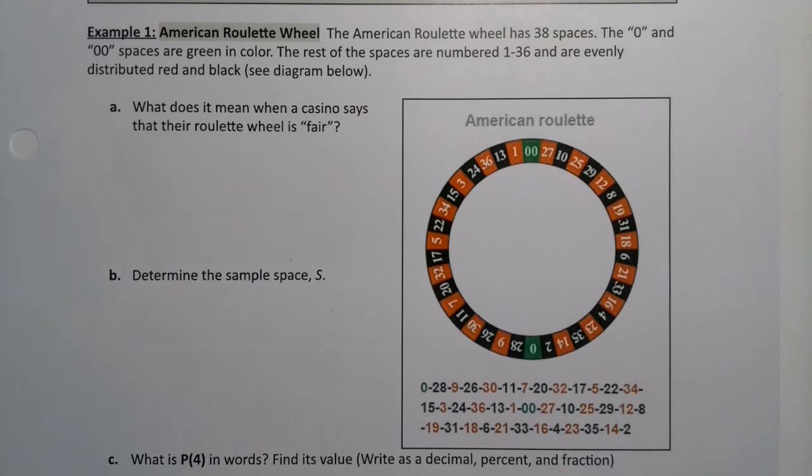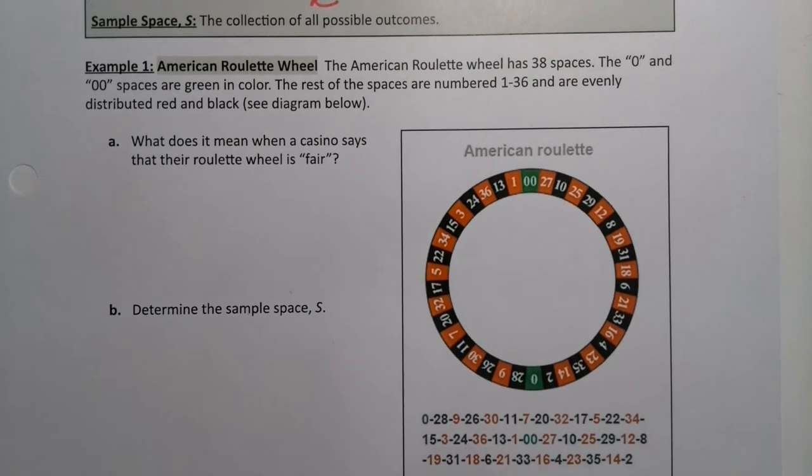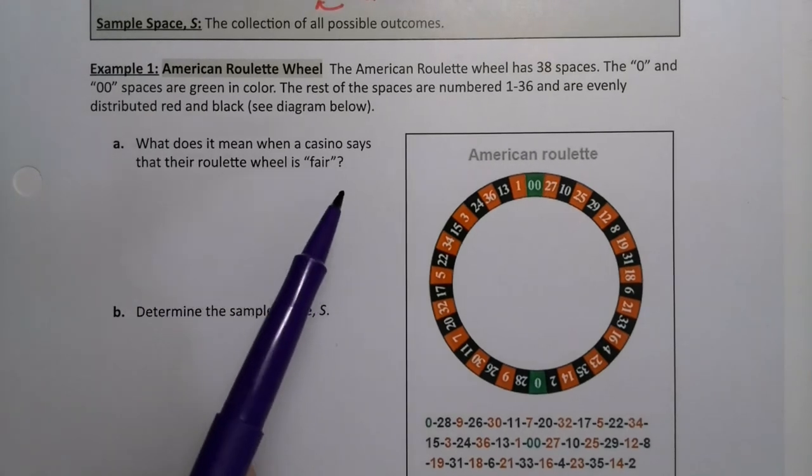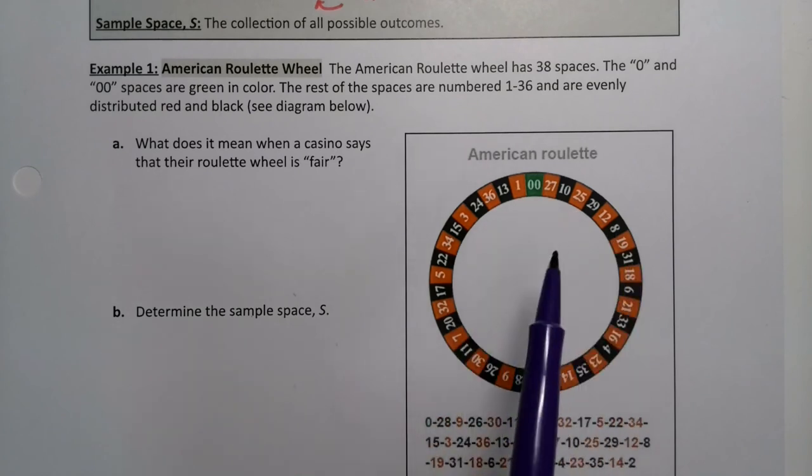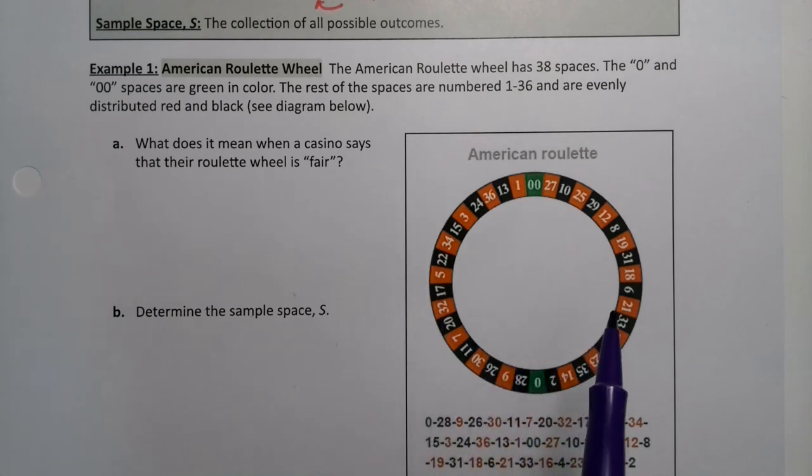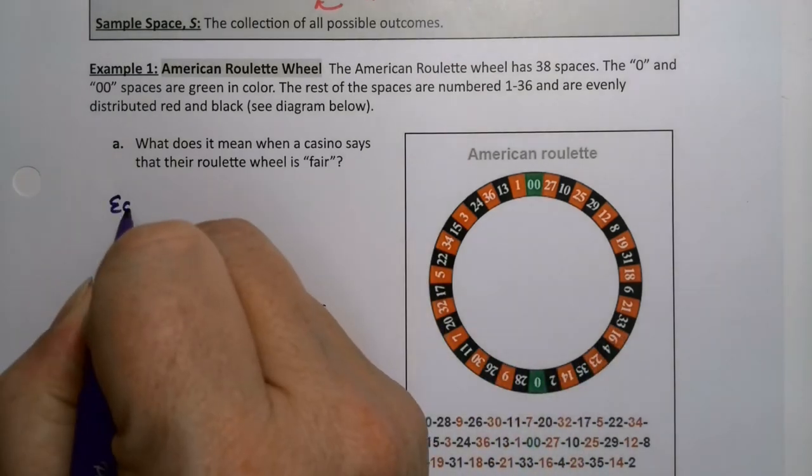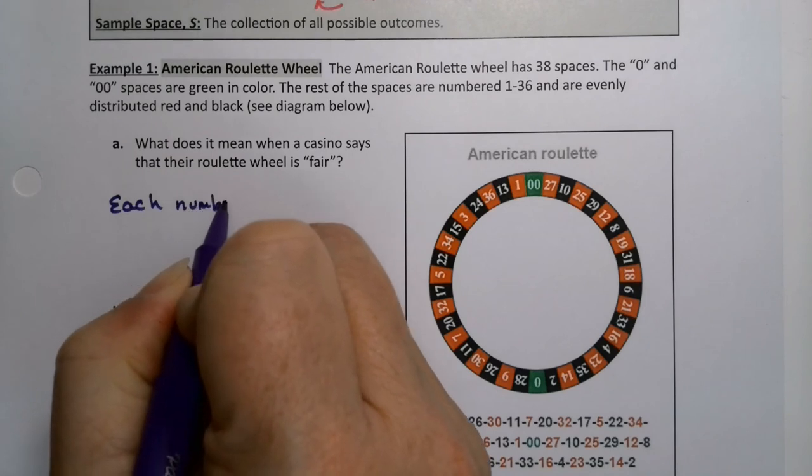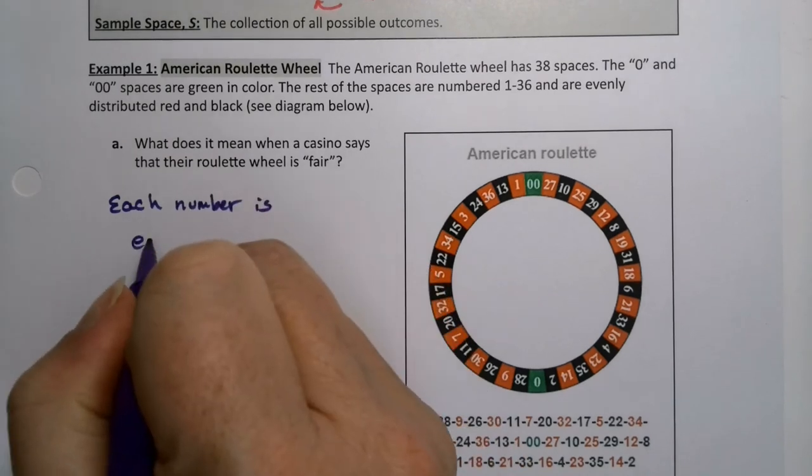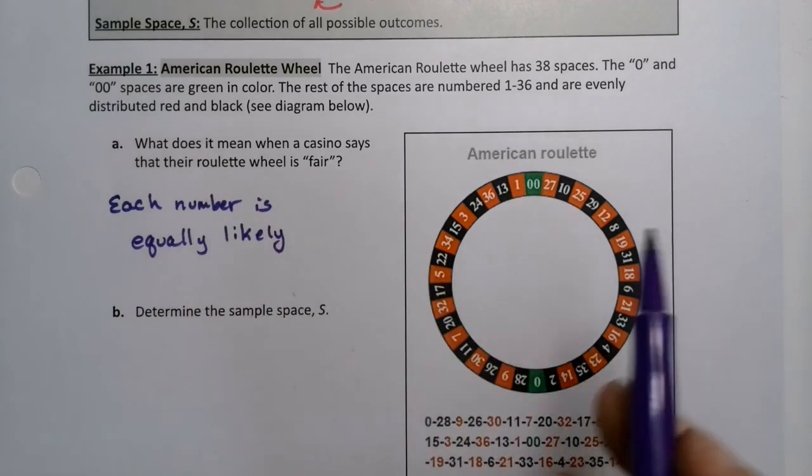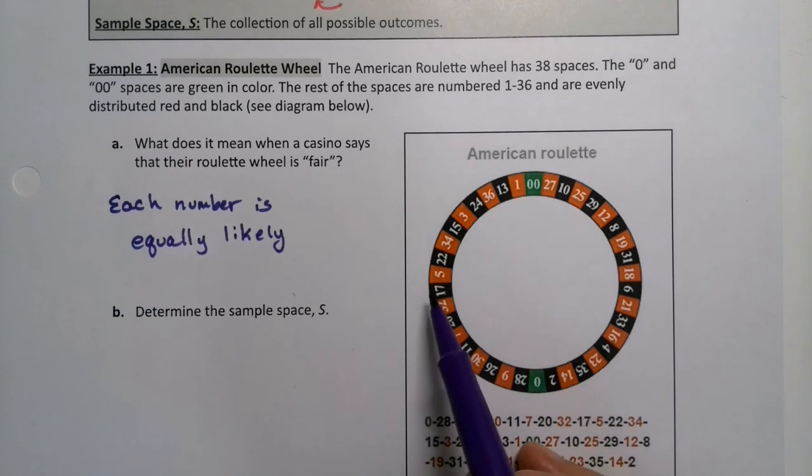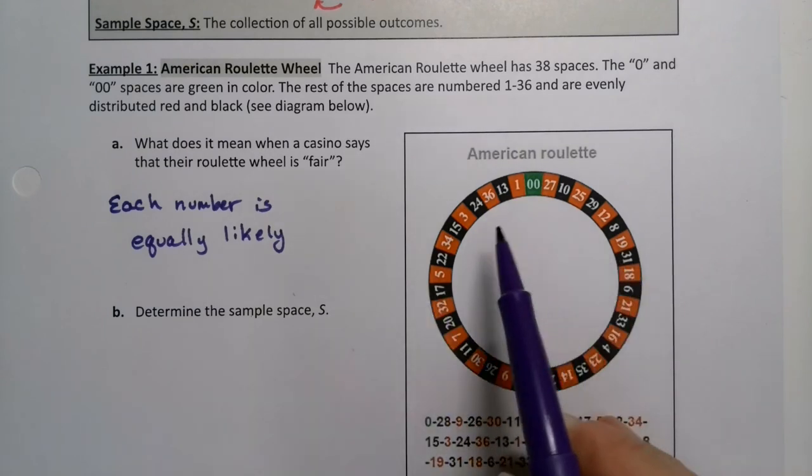If you walk into a casino and you want to play roulette, they will tell you that their roulette wheel is fair. What does that mean for a roulette wheel to be fair? Well, that would mean every pocket is equally likely. Every number is equally likely as every other number. You're just as likely to land on the 00 space as you are on the 17 space, as you are on the 4 space. They're all equally likely.